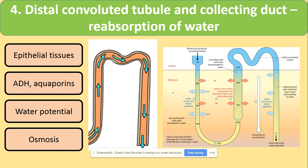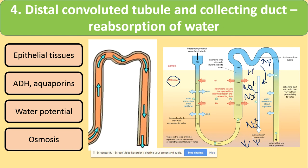Finally, in the distal convoluted tubule and collecting duct, further reabsorption of water takes place. Both are made of epithelial tissue. Sodium ions come out, increasing their concentration in the cortex across the whole length — this is a counter-current mechanism, similar to what we studied with fish in first year. The high concentration of sodium ions in the medulla means lower water potential there. The higher water potential in the distal convoluted tubule allows osmosis from the cortex to the medulla, and the collecting duct also helps reabsorb water.